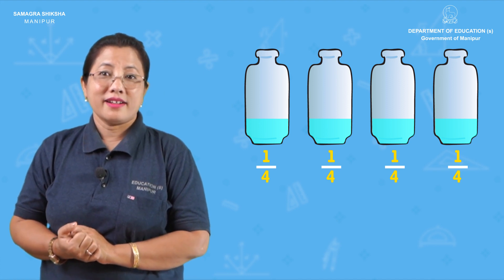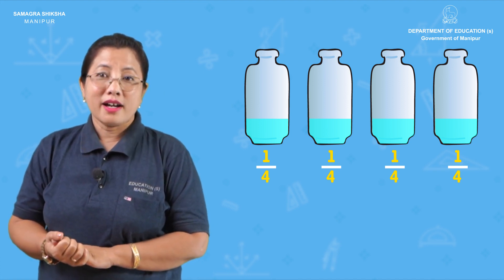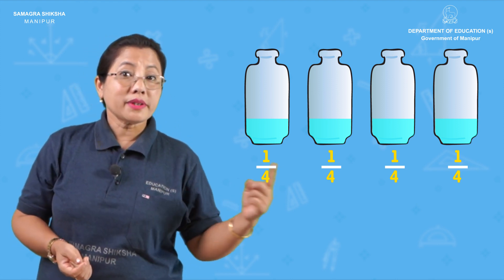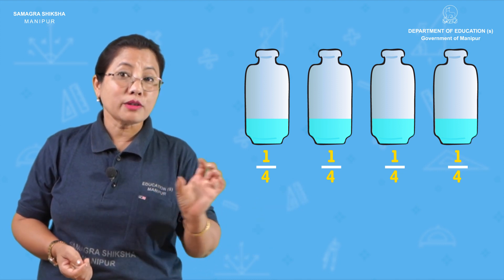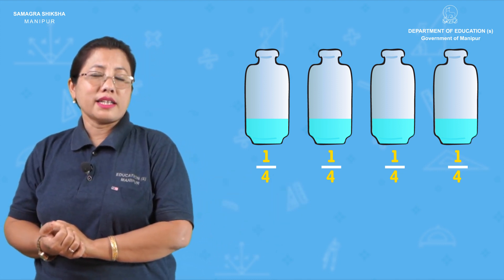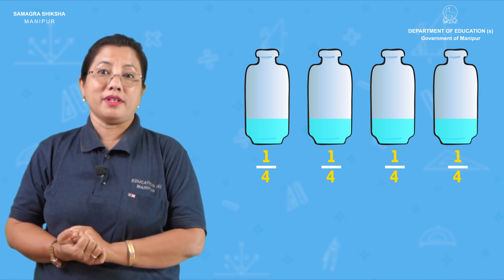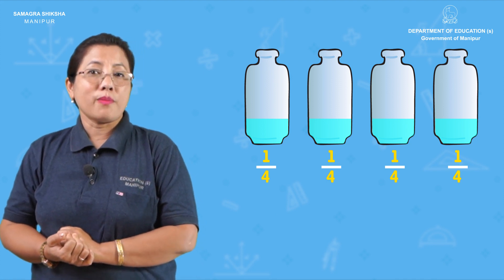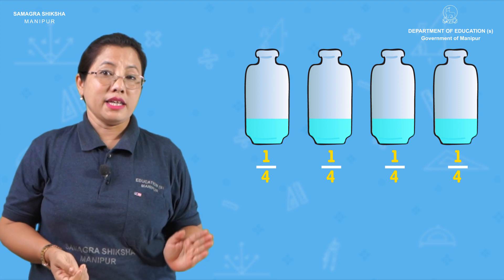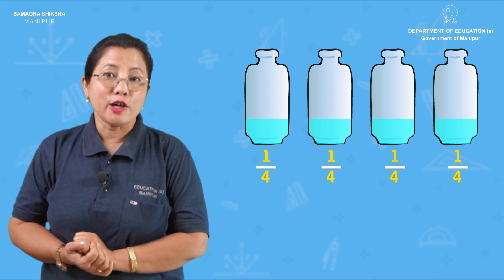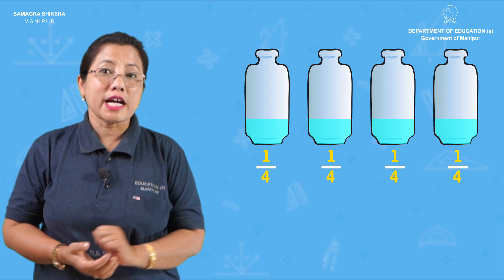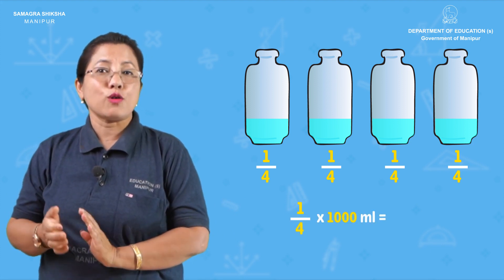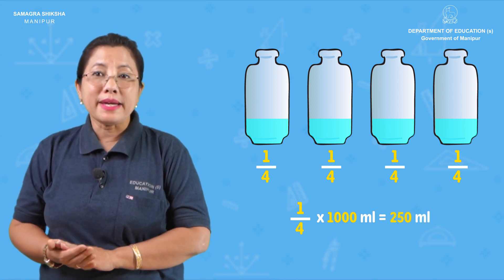If you have a bottle of 1,000 milliliters, you can use 1 by 4 into 1,000 milliliters, which equals 250 milliliters.